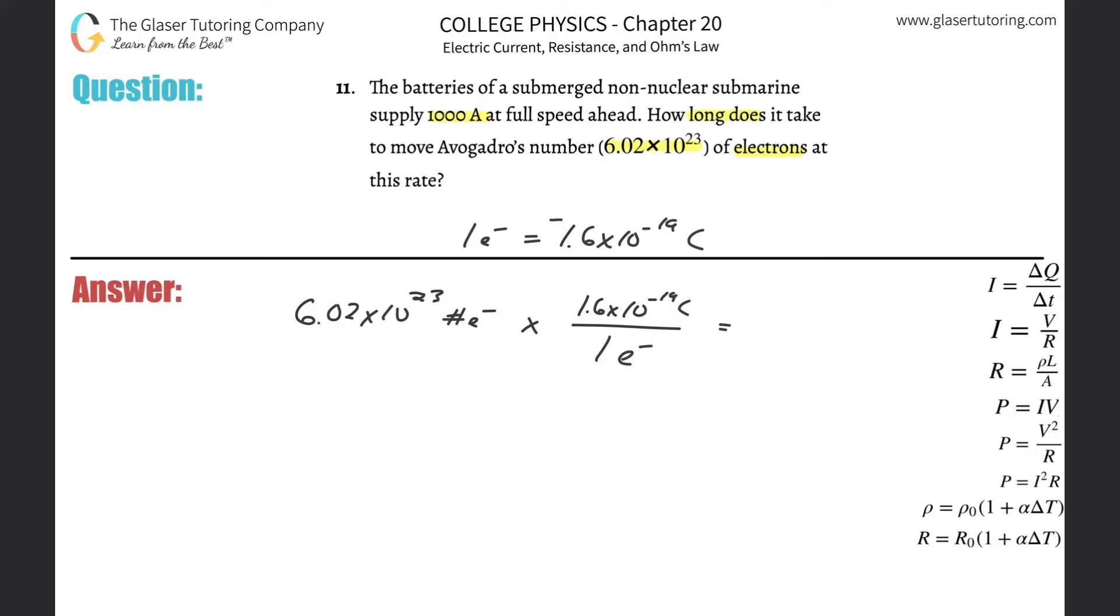So we get 6.02 times 10 to the 23rd, multiply by 1.6 times 10 to the minus 19th, and we get a value of about 9.63 times 10 to the fourth coulombs.